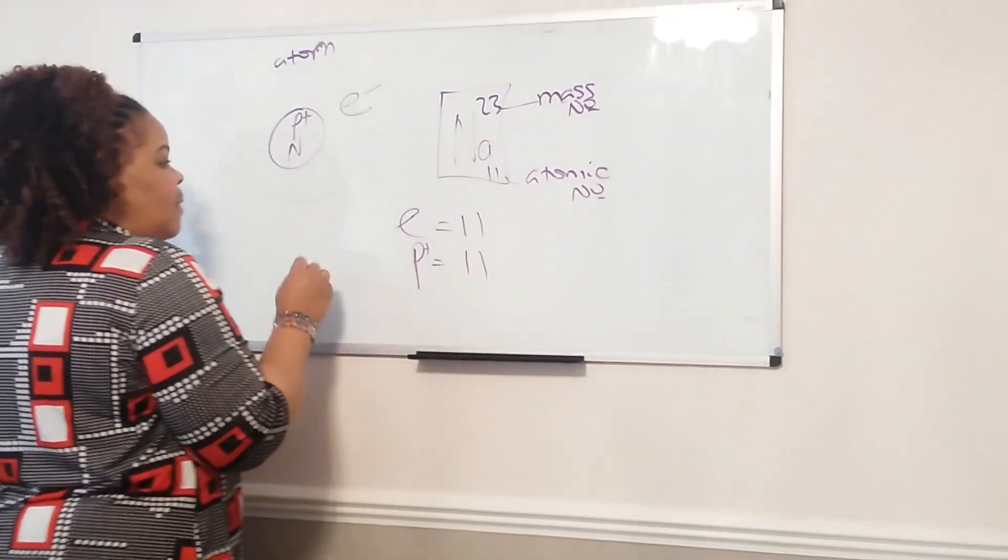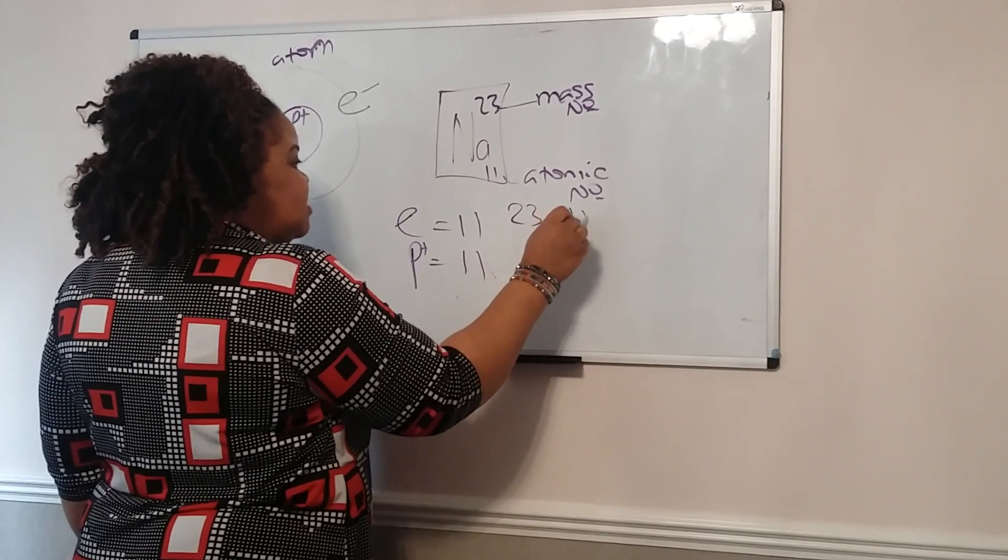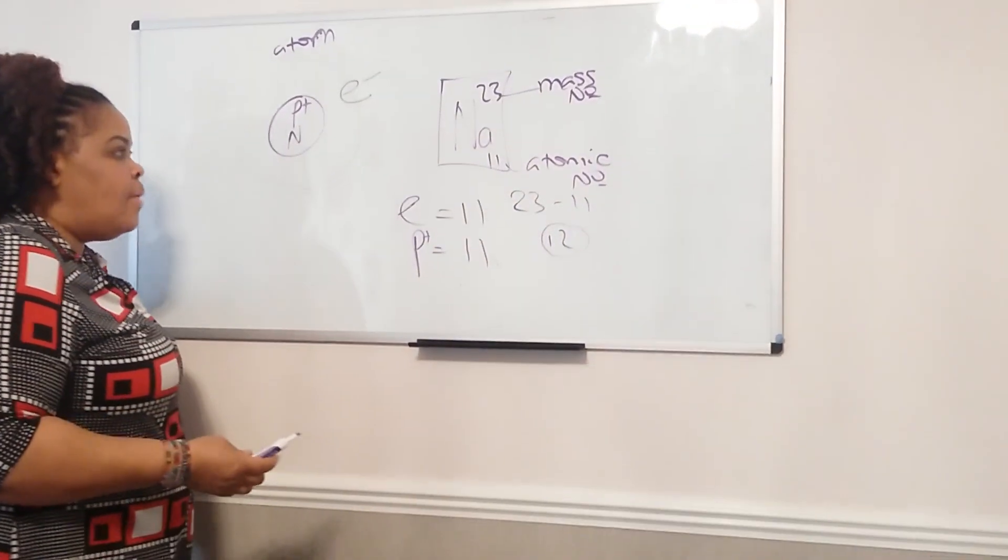Now, the way you work out the number of neutrons, you take away the little number from the large number. So it's 23 take away 11, which is 12. All right, that is the basic structure of an atom.